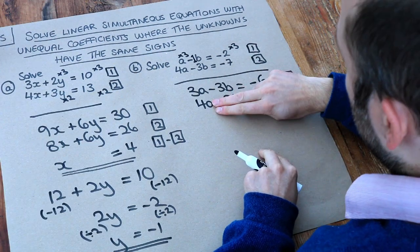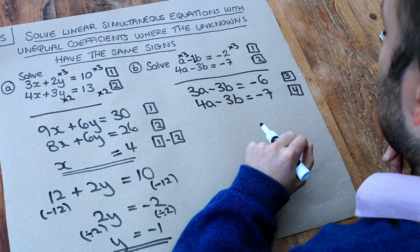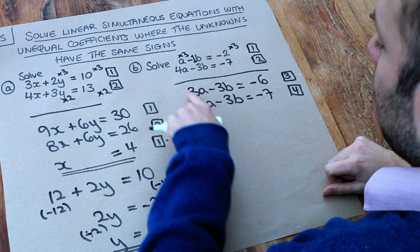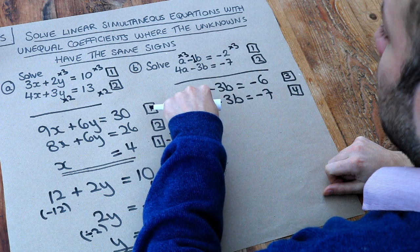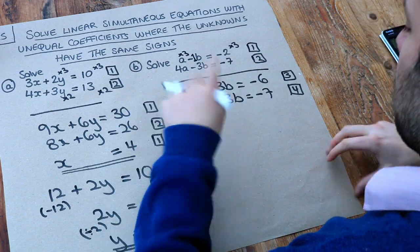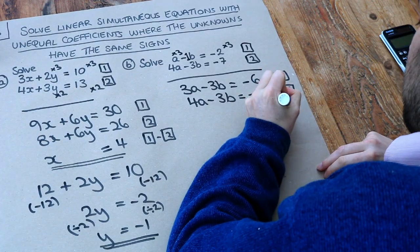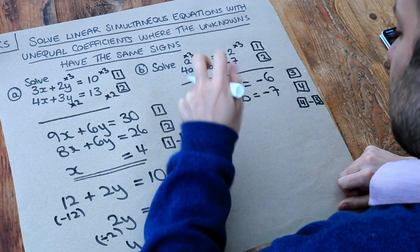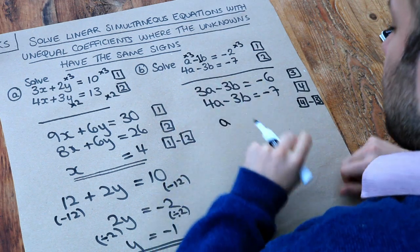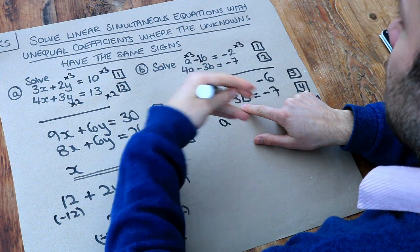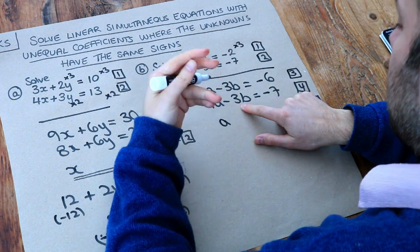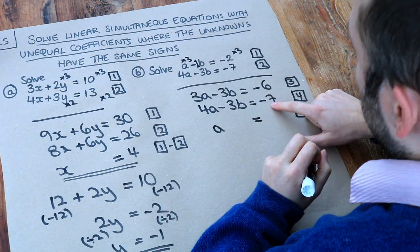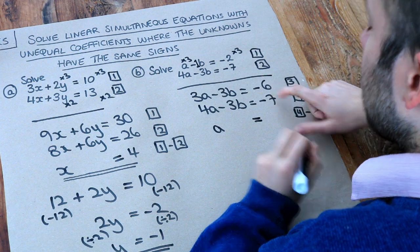Now I'm going to do this second equation minus the first equation. The reason I'm doing it that way around is because this 4a is bigger than 3a. So when I do that minus that, 4a minus 3a is a, rather than negative a if I subtract the other way around. So we try to keep things positive where possible. So we're going to do equation 4 minus equation 3. So this minus this is a. Minus 3b minus minus 3b, that's minus 3b plus 3b, is just 0, so that cancels. And minus 7 minus minus 6, that's minus 7 plus 6, which is minus 1.